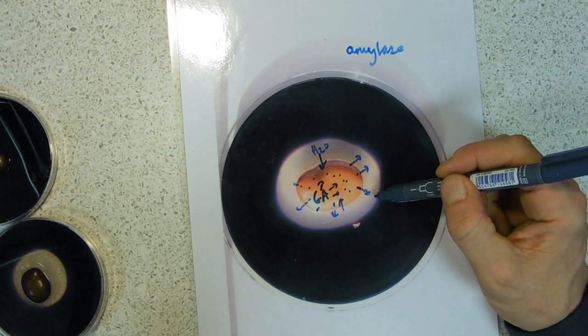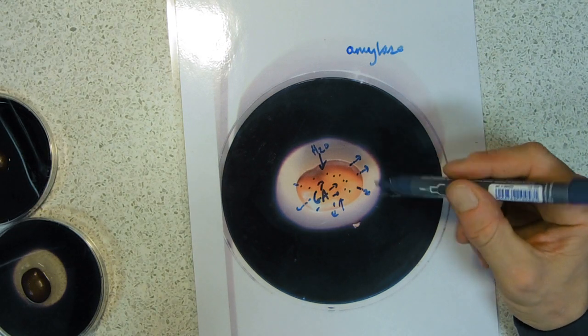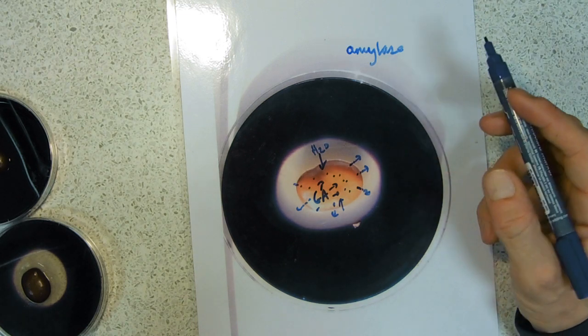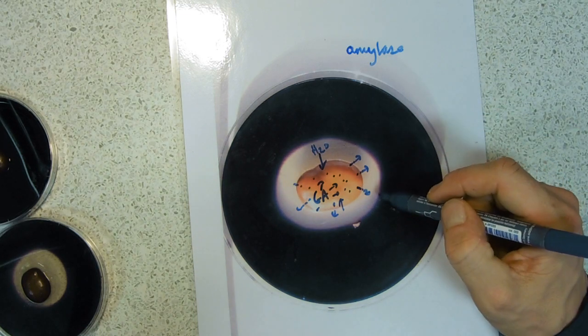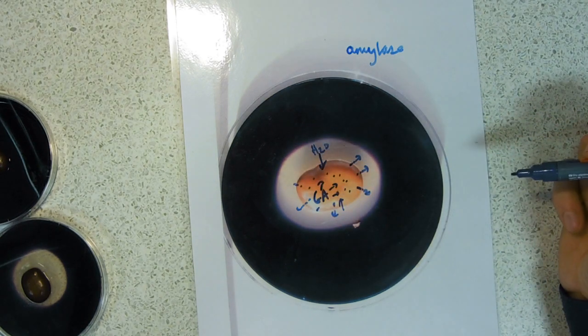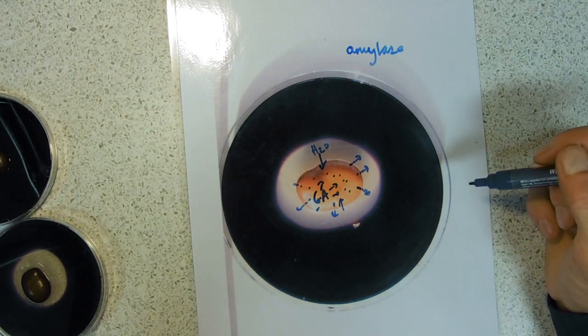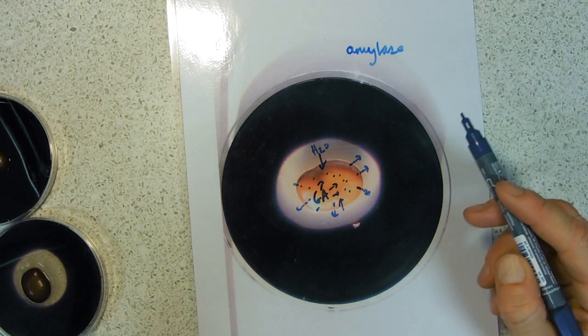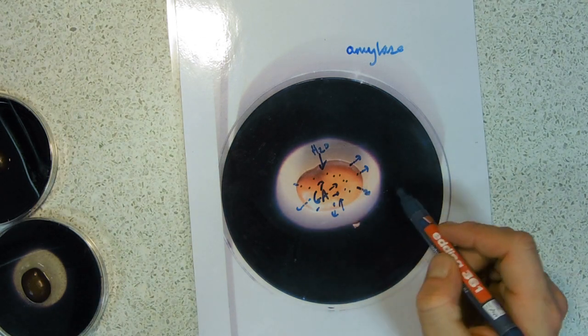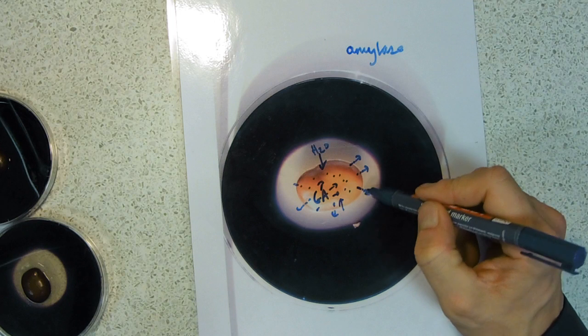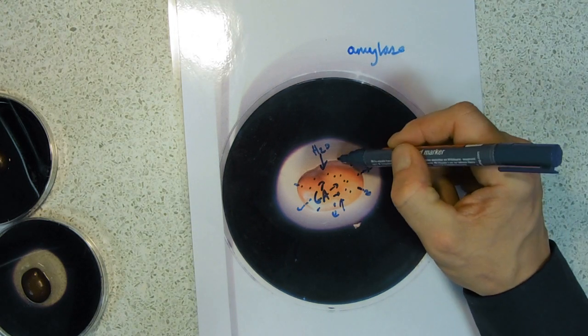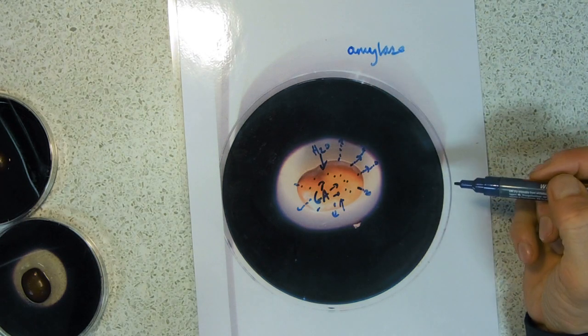Where it comes across starch, it catalyzes the breakdown of starch. It will hydrolyze it into maltose, and then that will not give a positive blue-black color for the iodine solution. We can take the diameter of this clear zone as an indication of how far the amylase has managed to diffuse outwards.